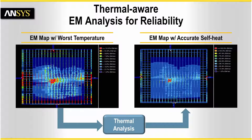Traditionally, EM sign-off methodology uses worst-case temperature for sign-off, which may be too pessimistic, causing many false violations. Our thermal-aware EM methodology, using RedHot and Totem, provides an accurate temperature gradient considering local self-heat effects on devices and wires.